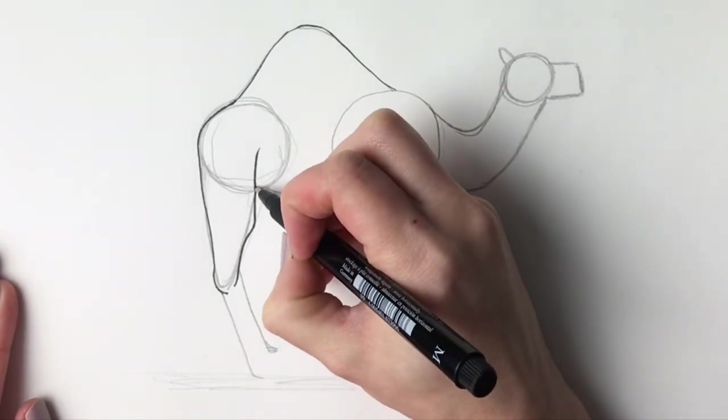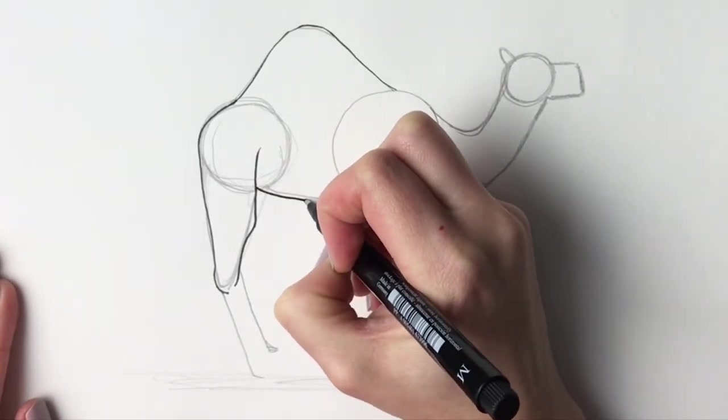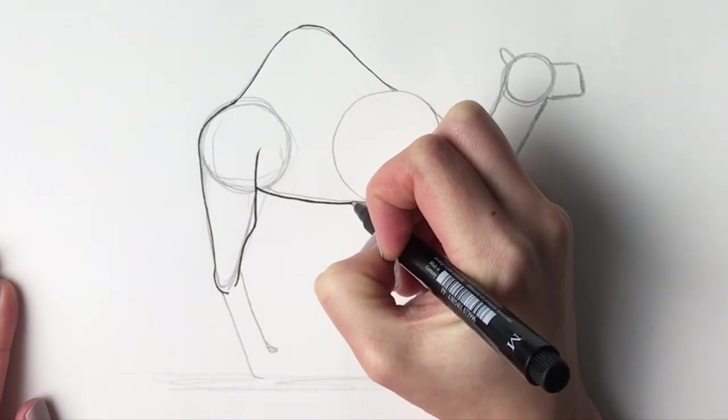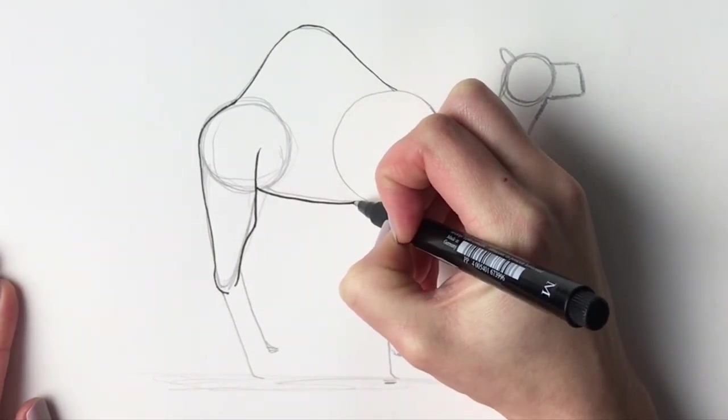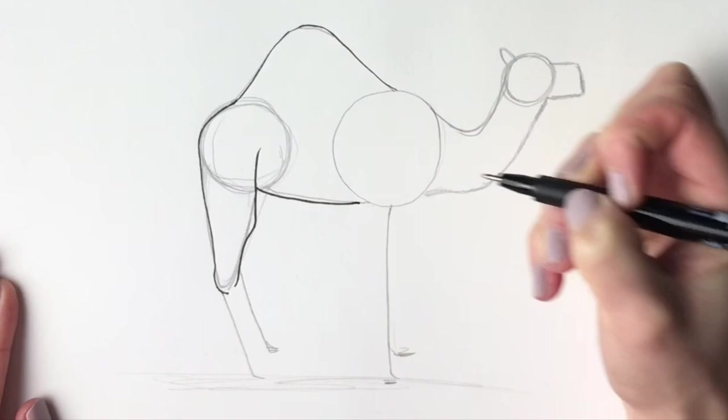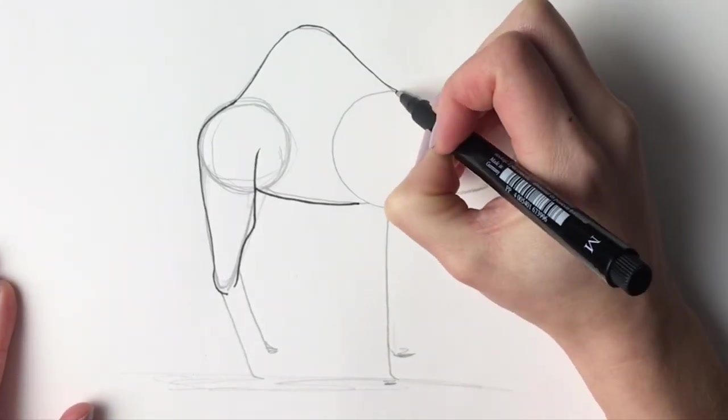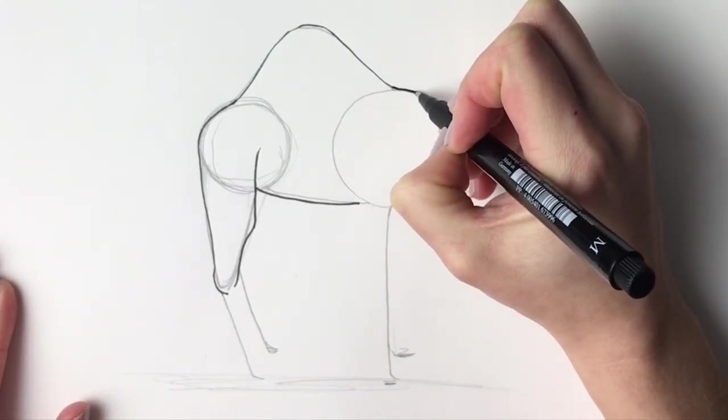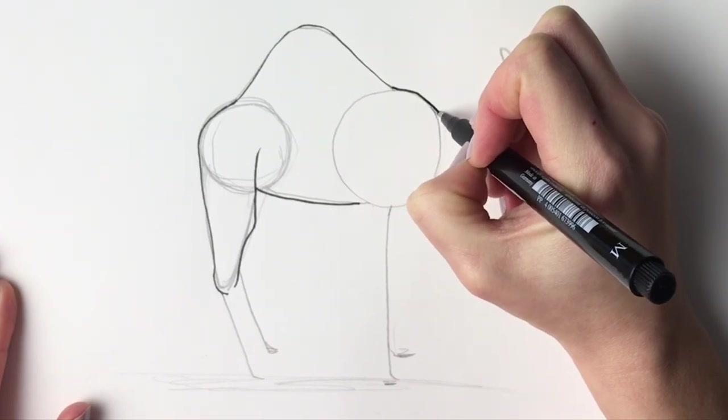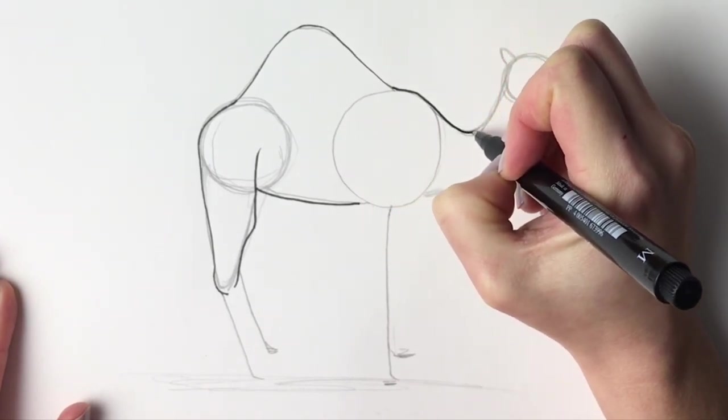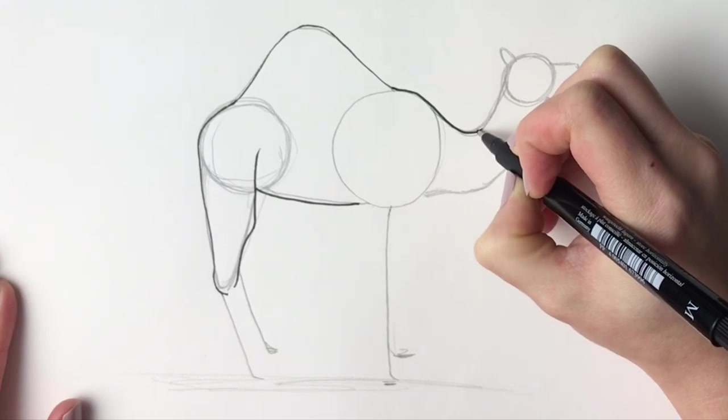Okay. So we're going to draw the tummy coming down. Then stop round about here. Now we're going to carry on this part. Draw the hump coming round the front. And then the neck.